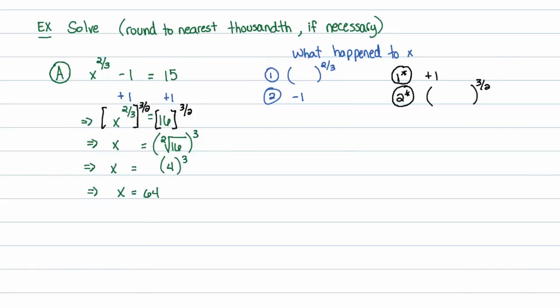We raised both sides to a power, so we should probably check our answer. You only have to check if you raise both sides to an even power — we raised to an odd power here, the 3rd power, and also took the square root. Plugging x=64 back in: 64 to the 2/3 is the cube root of 64, which is 4; 4 squared is 16; 16 minus 1 is 15. That checks out.